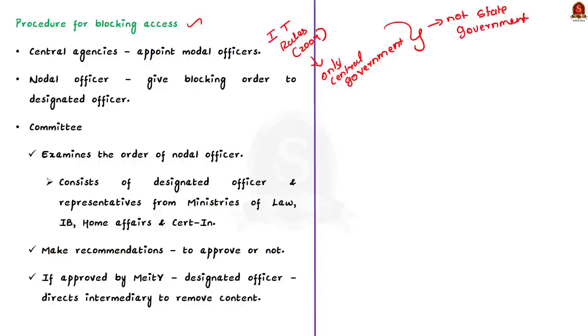The procedure under IT rules 2009 provides that central agencies should appoint a nodal officer who will forward the blocking order to the designated officer of the central government. This designated officer examines the request of the nodal officer and he is part of a committee. The committee comprises of representatives from ministries of law and justice, information and broadcasting, home affairs and certain. The committee while examining the request gives a notice to the creator of the content in question and he is asked to submit clarifications and replies. The committee then makes a recommendation on whether the request of the nodal officer should be accepted or not.